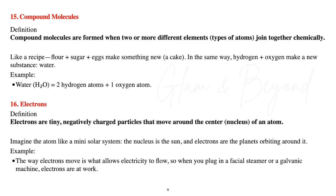Number sixteen, electrons. Electrons are tiny, negatively charged particles that move around the center nucleus of an atom. Imagine the atom like a mini solar system: the nucleus is the sun and electrons are the planets orbiting around it. The way electrons move is what allows electricity to flow, so when you plug in a facial steamer or a galvanic machine, electrons are at work.